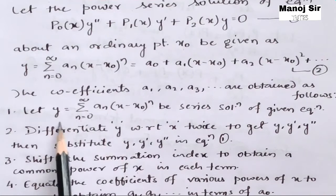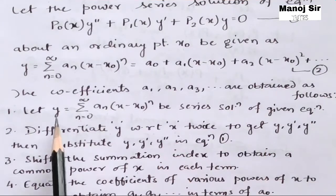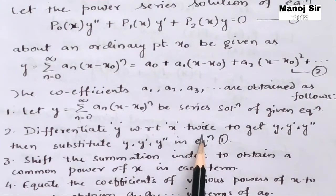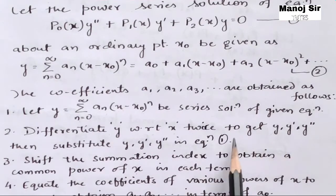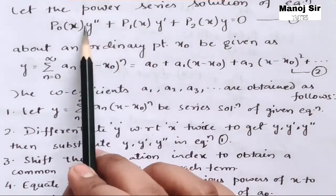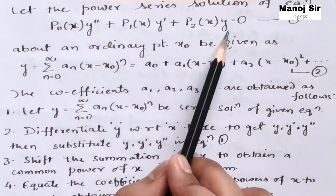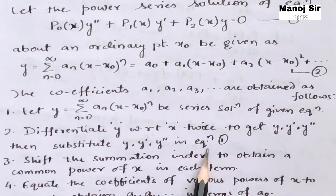Step 2: Differentiate y with respect to x twice to get y, y', and y''. We differentiate twice because the power series equation contains y''. After finding y, y', and y'', substitute them into equation (1).